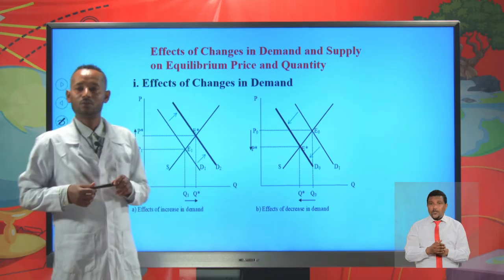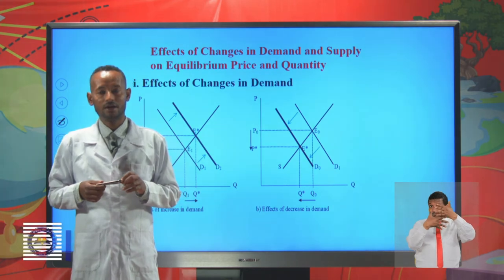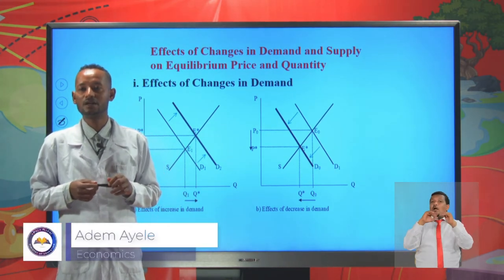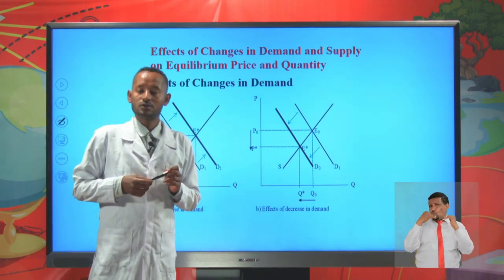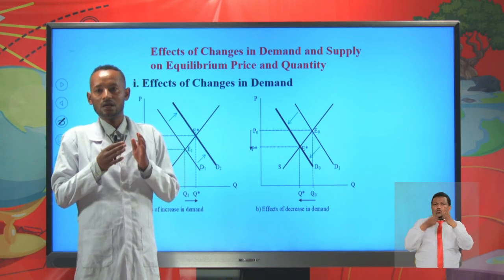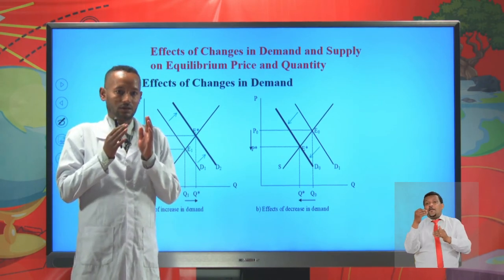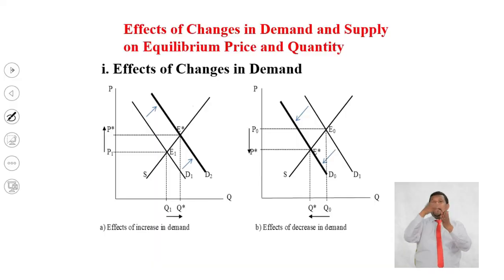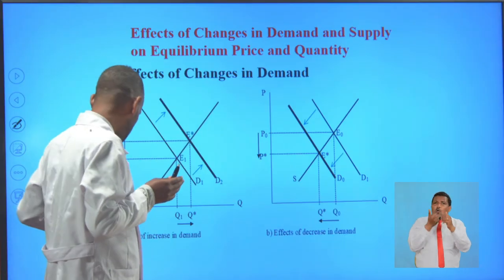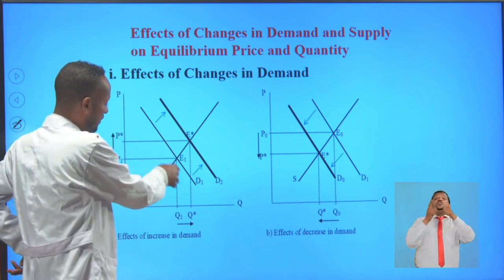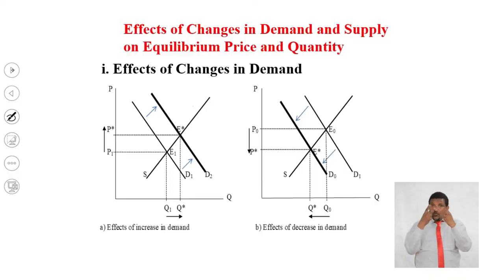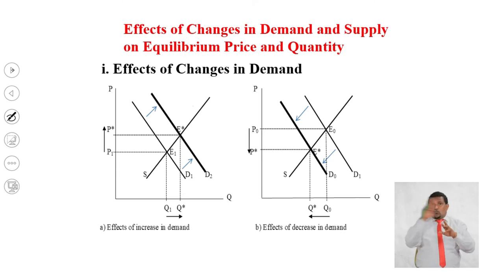Now let's see another important lesson under market equilibrium: the effects of changes in demand and supply on equilibrium price and quantity. First, let's see the effects of changes in demand while supply remains unchanged. This is the supply curve which remains unchanged and this is the initial demand curve. When we see the effects of an increase in demand, an increase in demand is represented by a rightward shift of the demand curve from its original position.